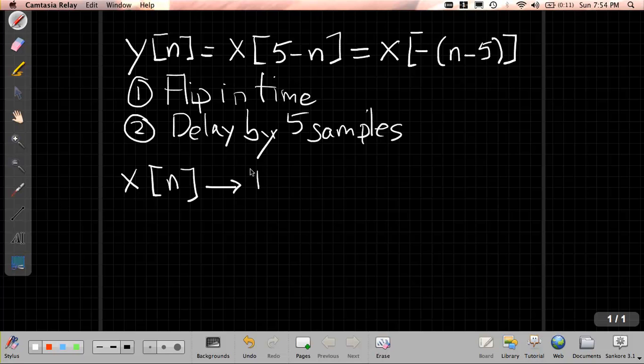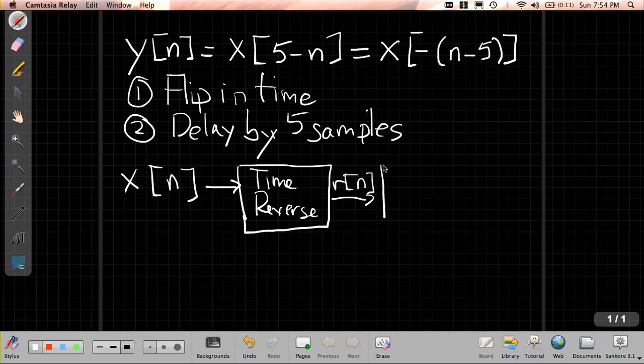If I do x[n], I take that signal and put it into a system that does a time reverse. And say I call the output of that r[n], and then I run that system through the delay by five, in this case. And we call that y[n].